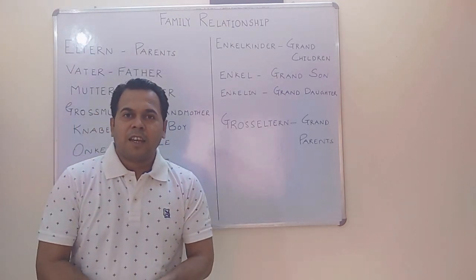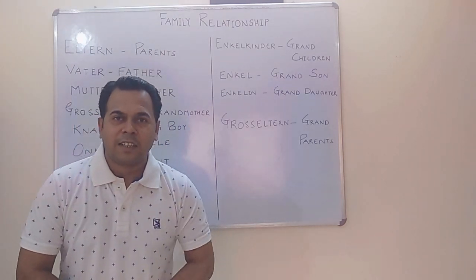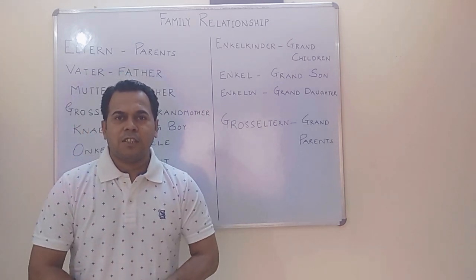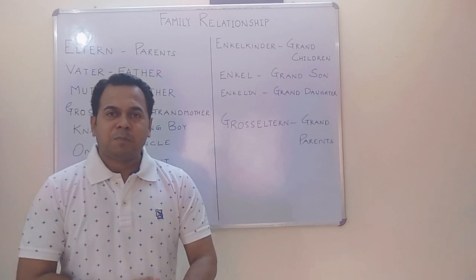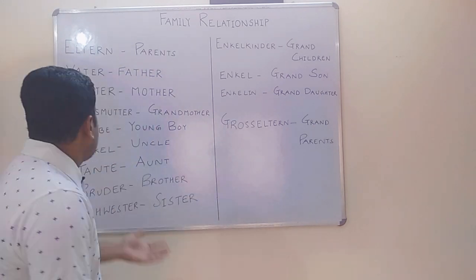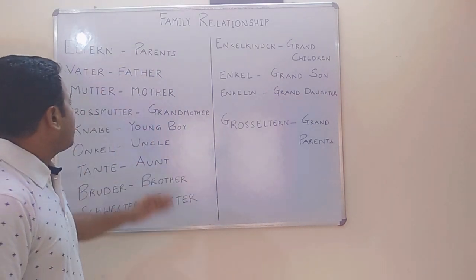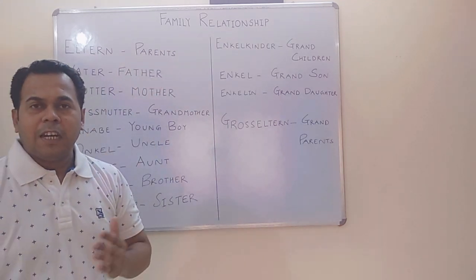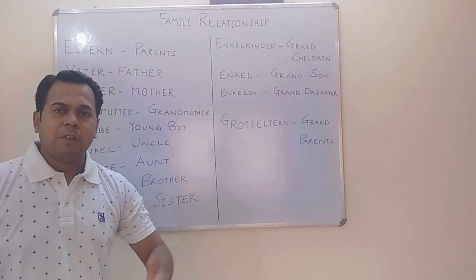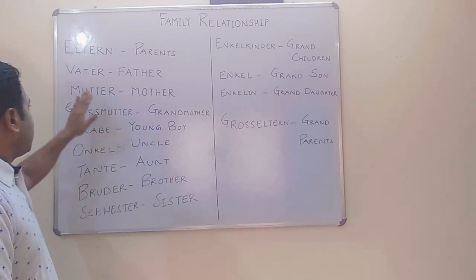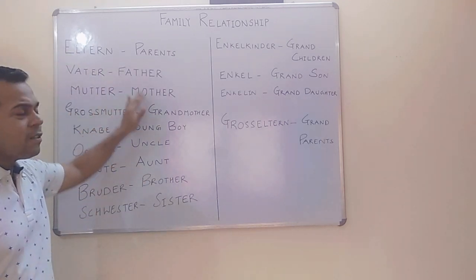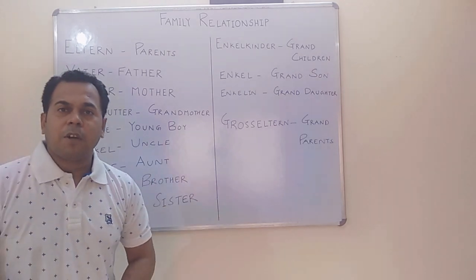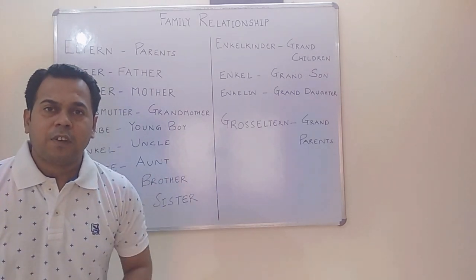Hi friends, good morning and thanks for clicking in. Today's session we are going to talk about family relationships in German language. Let's begin. First word is Eltern — Eltern means parents. So in English we say parents, in German we say Eltern. Next, Vater — that means father. We pronounce V as F in German language.